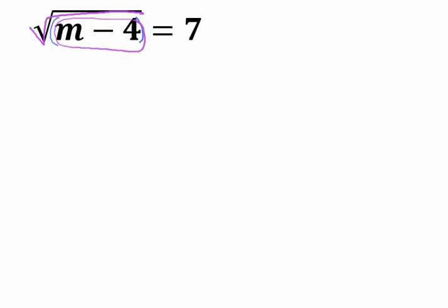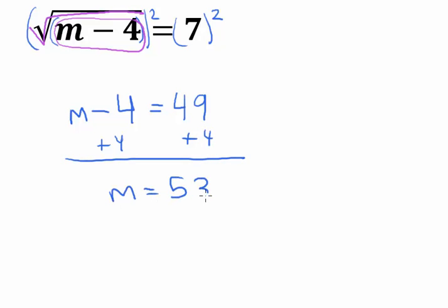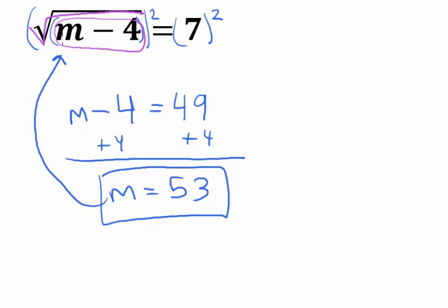If we don't see that, let's do it explicitly — square both sides, just like we did last time. That gives us m minus 4 equals 7 squared, which is 49, just as we said. Now it's just a simple linear equation: m is equal to 53. If I plug 53 back into the equation: 53 minus 4 is 49, and the square root of 49 does indeed equal 7.